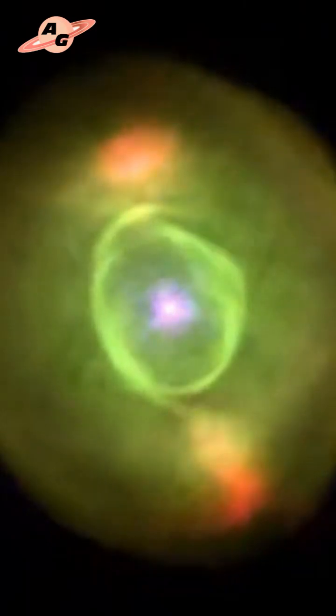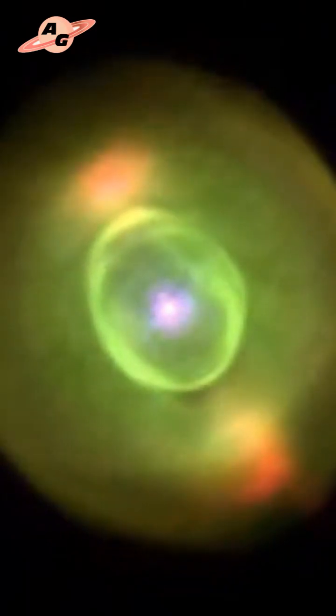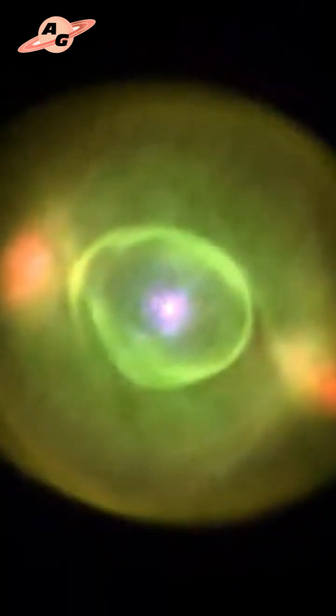This white dwarf has a mass of no more than 55% of the sun's at a near-Earth radius. The temperature on its surface is about 47,000 Kelvin, and its luminosity exceeds the luminosity of our sun by more than 1,300 times.